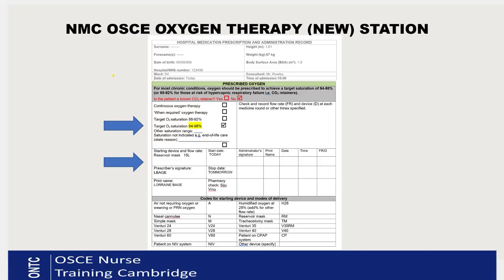Oxygen is a prescribed medication in the UK, so we need to check the validity of the prescription. On the prescription page, first look for the target saturation, which is 94 to 98 percent. Then check: the device and flow rate — reservoir mask at 15 litres; the start date is today; the prescriber signature is L. Beige; the stop date is tomorrow; the print name is Dr. Lorraine Beige; and there is also a pharmacy signature. This is a complete and valid prescription.